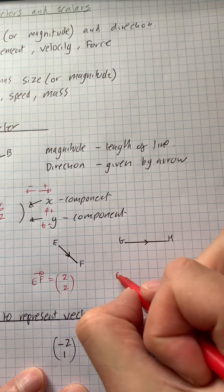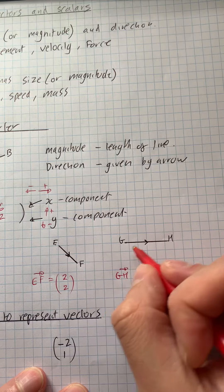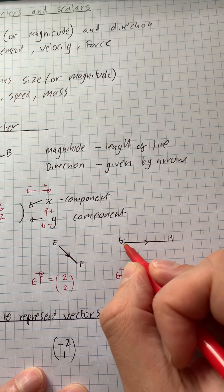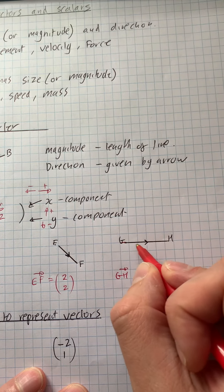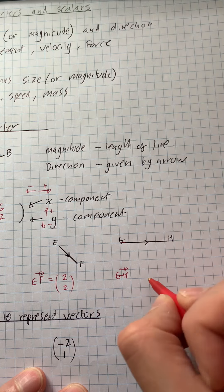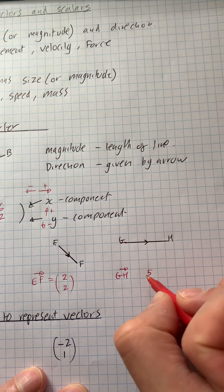And this one, G to H. If we're going across, we'll call that 1, 2, 3, 4, 5. But we're not going up or down any, so we just have to put 0.